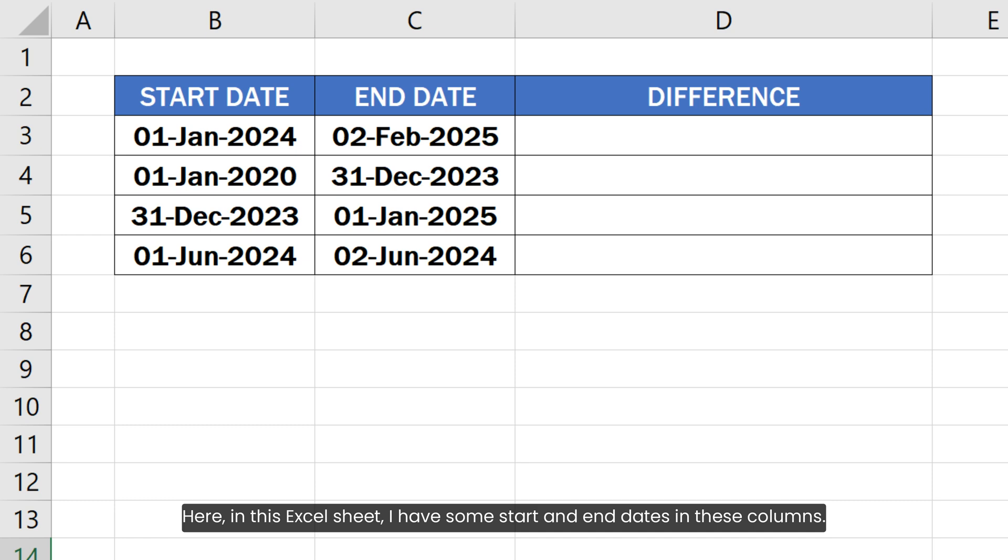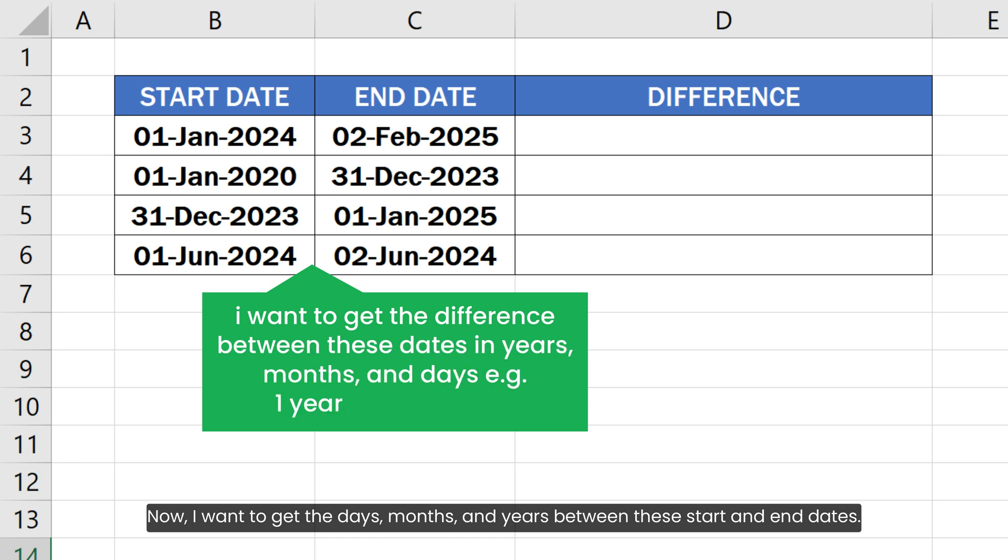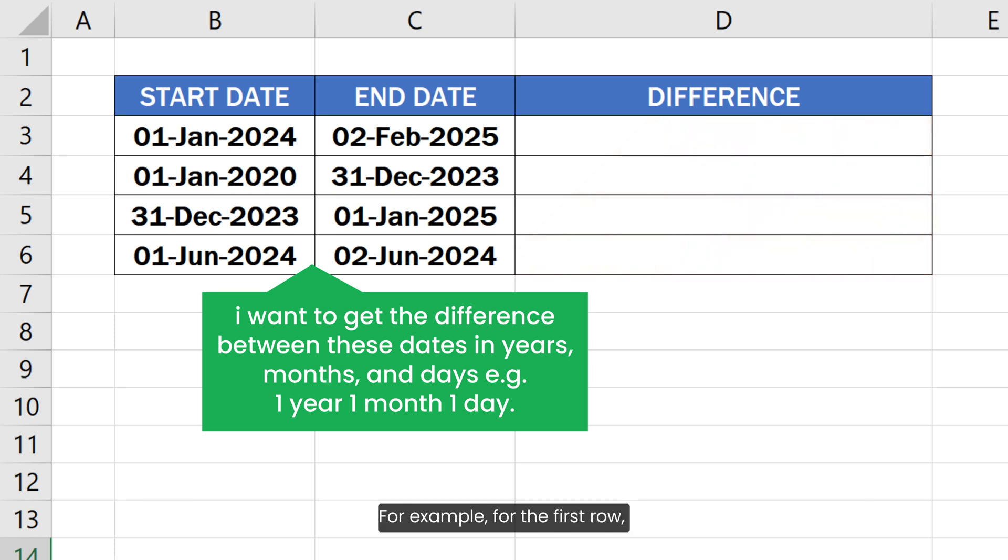Here in this Excel sheet, I have some start and end dates in these columns. Now I want to get the days, months and years between these start and end dates. For example, for the first row, I want to get the difference as one year, one month and one day.